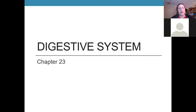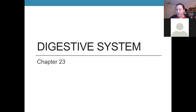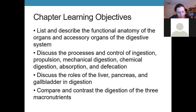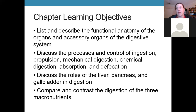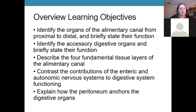Today we're going to talk about the digestive system. This is the first system of the last group of systems we're going to cover, and once we get through reproductive we will have covered all the systems in the body. Today we're going to look at the anatomy and physiology of all the organs of the system, and then go through the processes and functions organ by organ, following the same path that food takes.